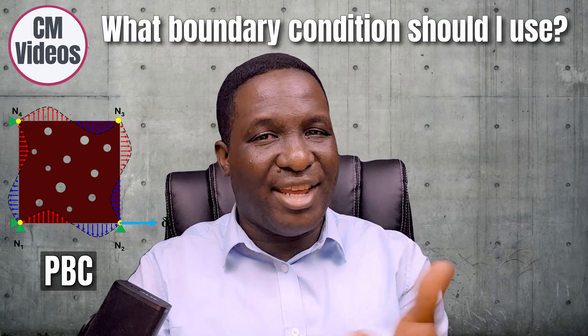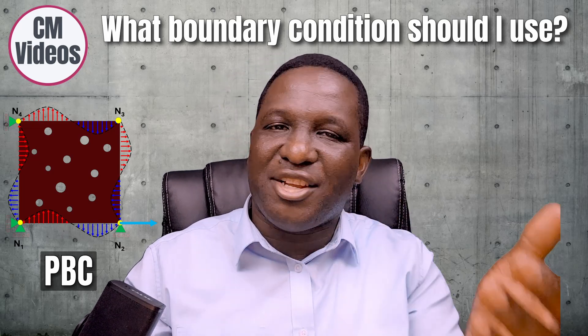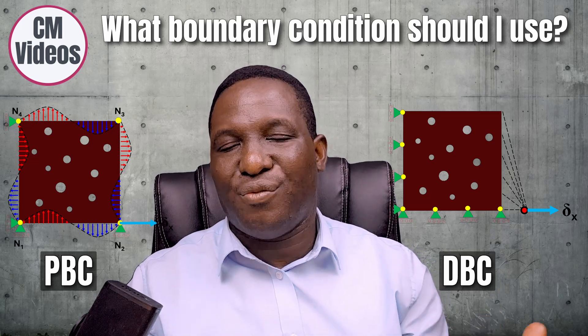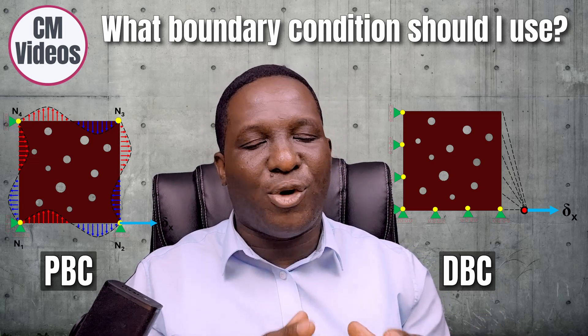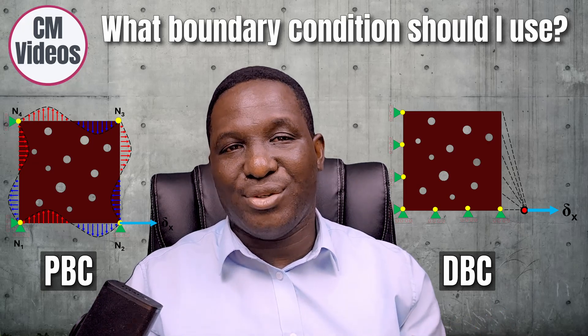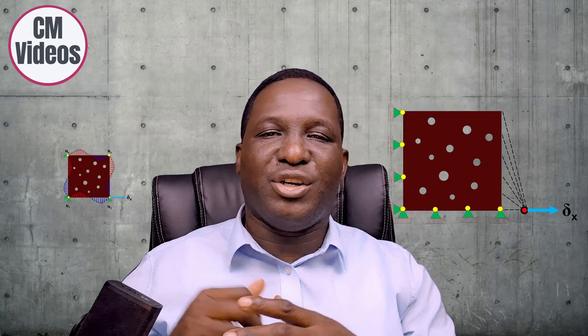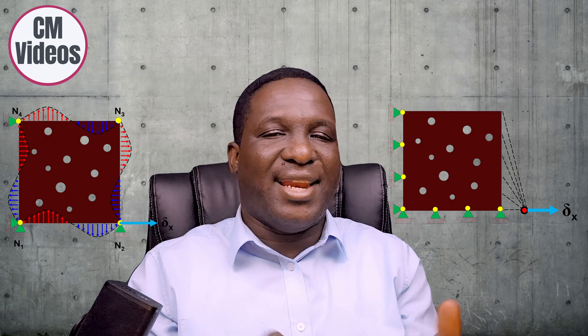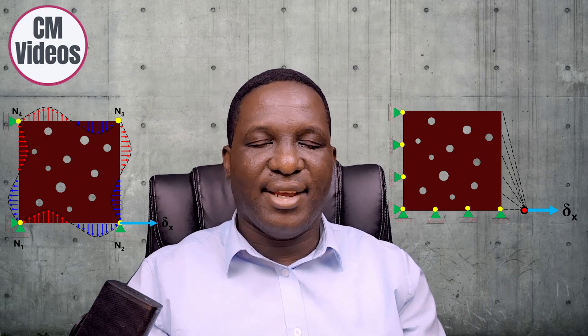One of the questions I get asked a lot by students is should I use a periodic boundary condition for this micromechanical modeling or maybe a traditional Dirichlet style boundary condition. I often give them my suggestions of what I think they should do, but I think a more correct way to answer this question is to actually do a little experiment where we set up a model with a Dirichlet boundary condition, another one with a periodic boundary condition, generate stress and strain data from both setups and see what we can learn. That's what we're going to do in this video.